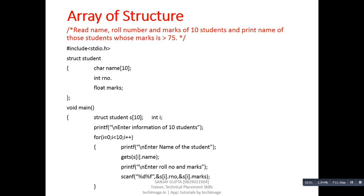Now with the help of this program we can understand the concept of array of structures. In this program we are going to read roll number, name, and marks of 10 students, and it will print names of those students whose marks is greater than 75. Here, first of all the structure is declared. Further, to store information of 10 students, we have declared an array of structure. For the loop process we have declared variable 'i'.